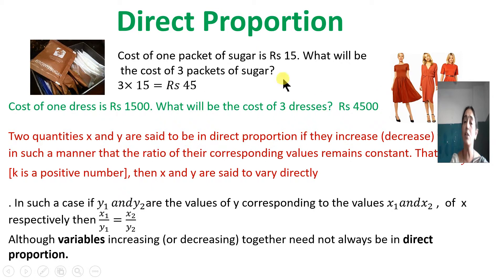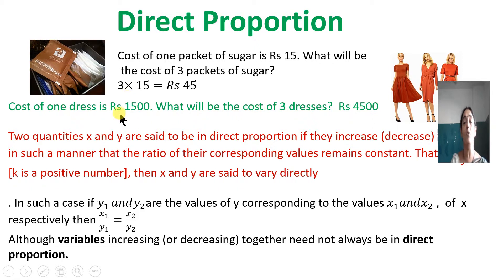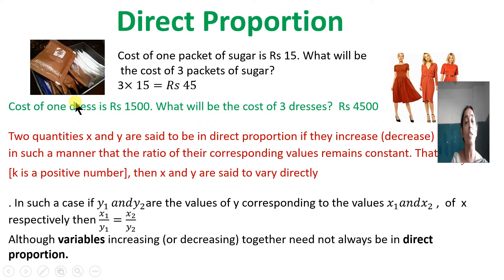Suppose there were three dresses and the cost was rupees 4500. Then what will be the cost of one dress? One dress was 1500. So if the quantity decreases, cost also decreases. When one quantity increases the other also increases, or when one quantity decreases the other also decreases — that is when we use the idea of direct proportion.